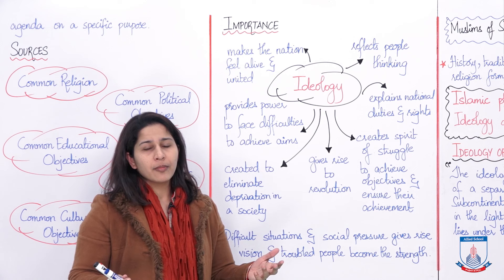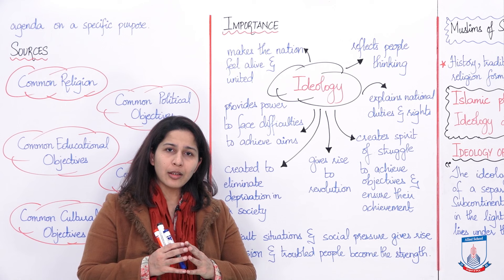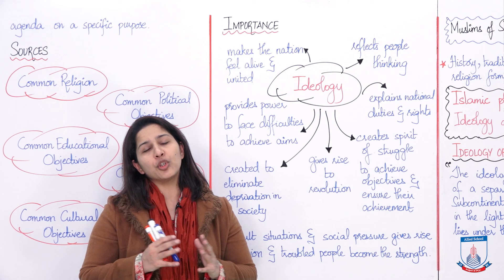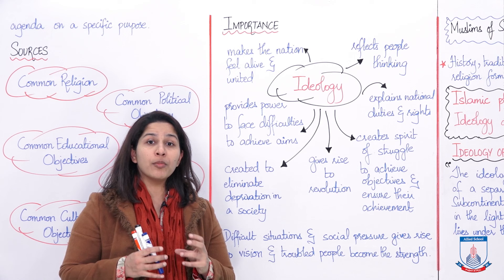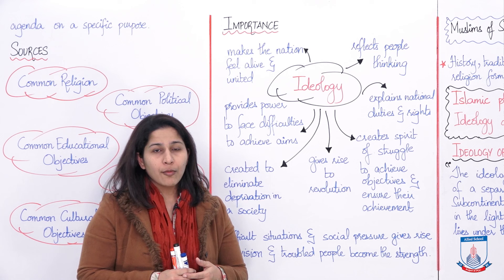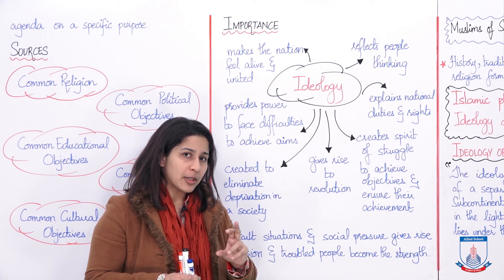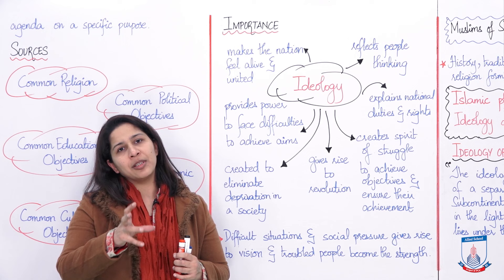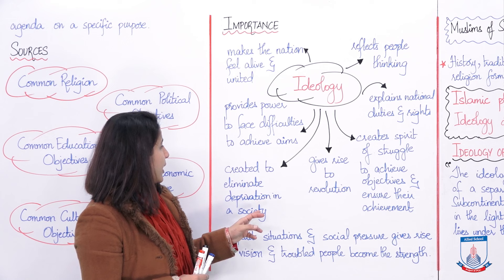Ideology gives rise to revolution. Muslims got that strength because of the social, economic, and cultural situations around them. Those situations that changed around them compelled them, and that brought the revolution of a separate homeland for Muslims. It creates the spirit of struggle to achieve objectives and ensure their achievement — it not only awakens the spirit to achieve objectives but also ensures that the destination will be reached and the goal will be fulfilled.